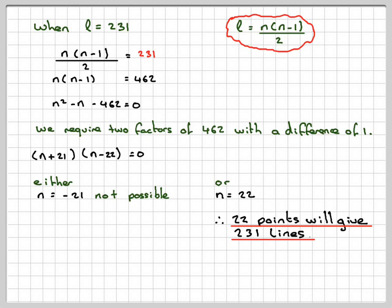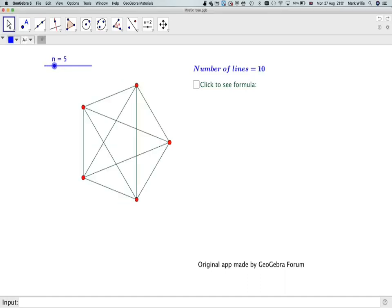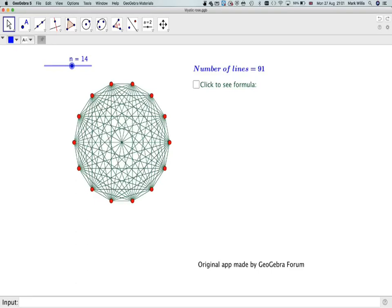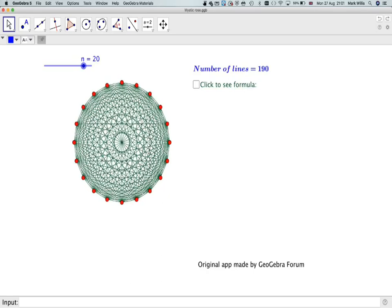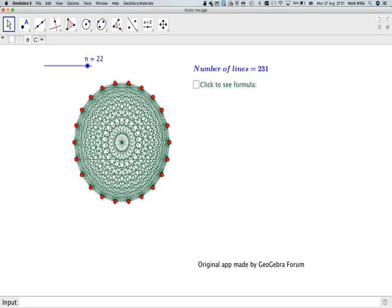Now, if we go back to the app, remember the app, I am going to put the link in the notes of the YouTube video. So going back to the app, and if we move it like this, we can see our app, and it's quite pretty. The one I modified because I wanted different colours. So, 21, 22, we can see we've got 231. We can click here and we get the formula that we want. The number of lines is N times N minus 1.